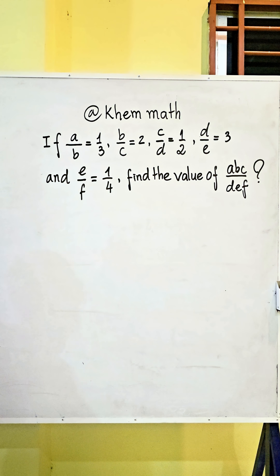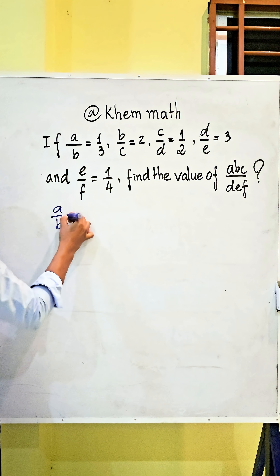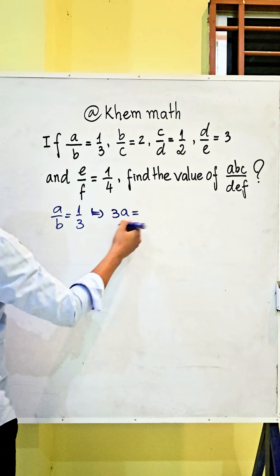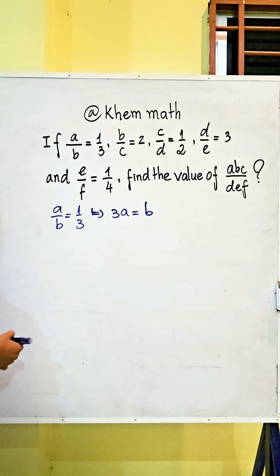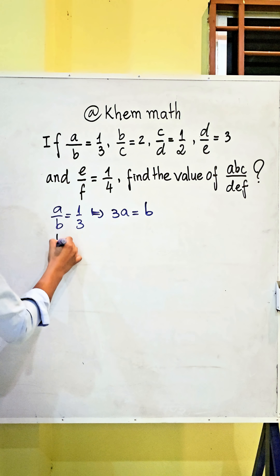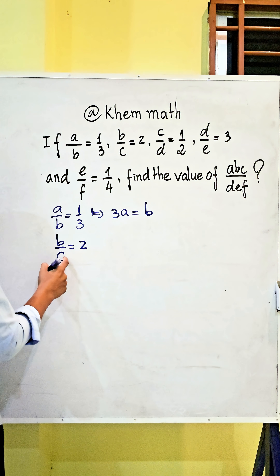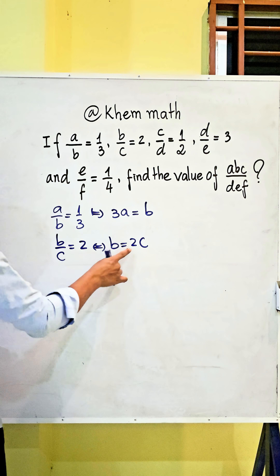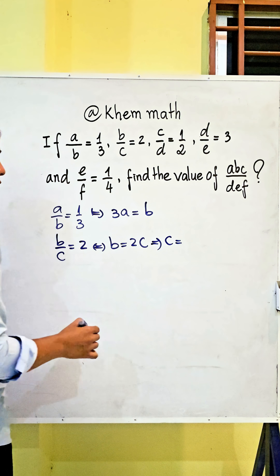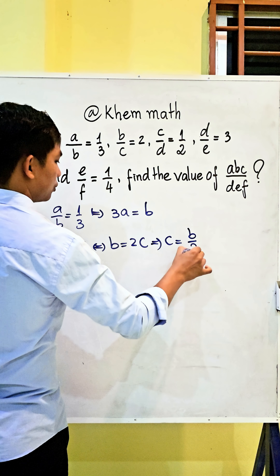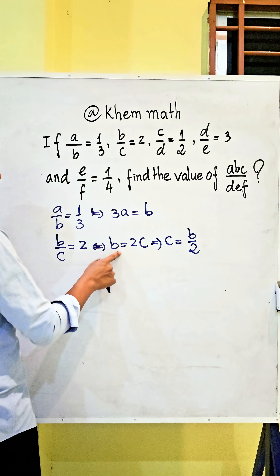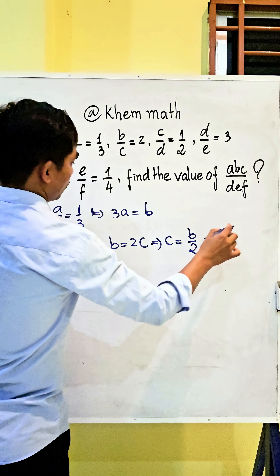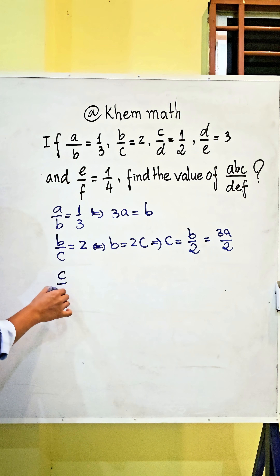We use these equations. From a divided by b equals 1 divided by 3, we cross-multiply to get b equals 3a. From b divided by c equals 2, we get b equals 2c, so c equals b divided by 2. Since b equals 3a, we get c equals 3a divided by 2.